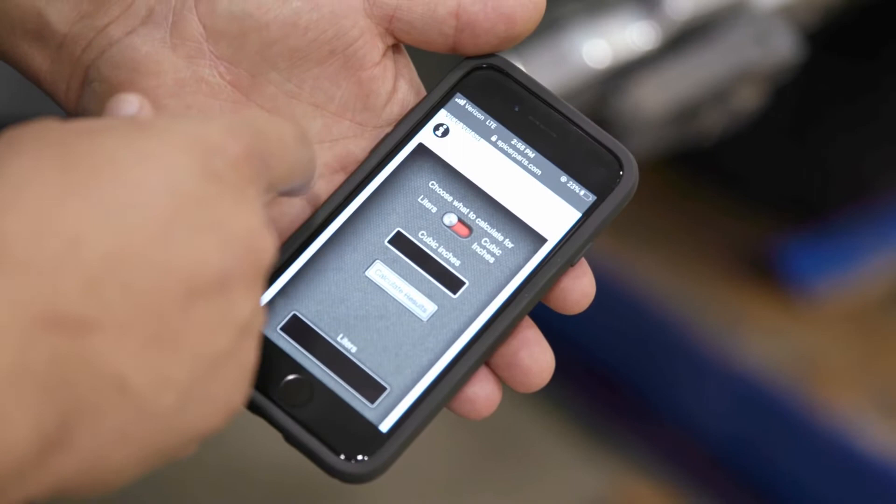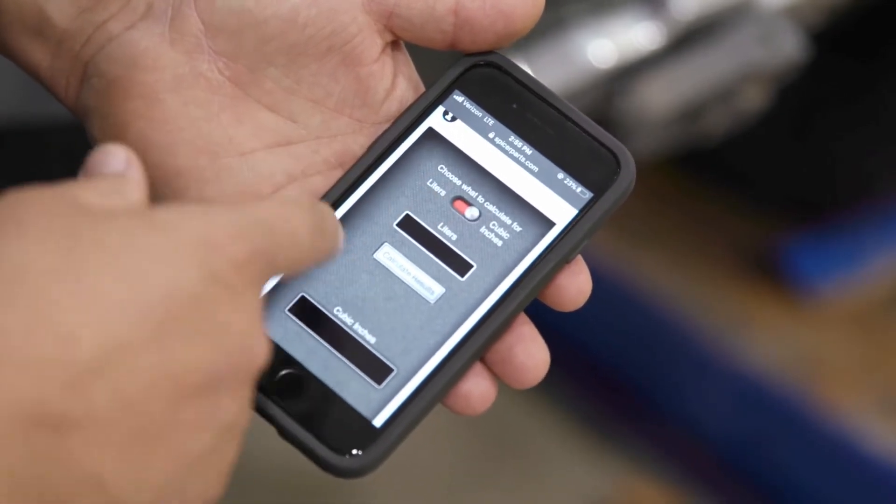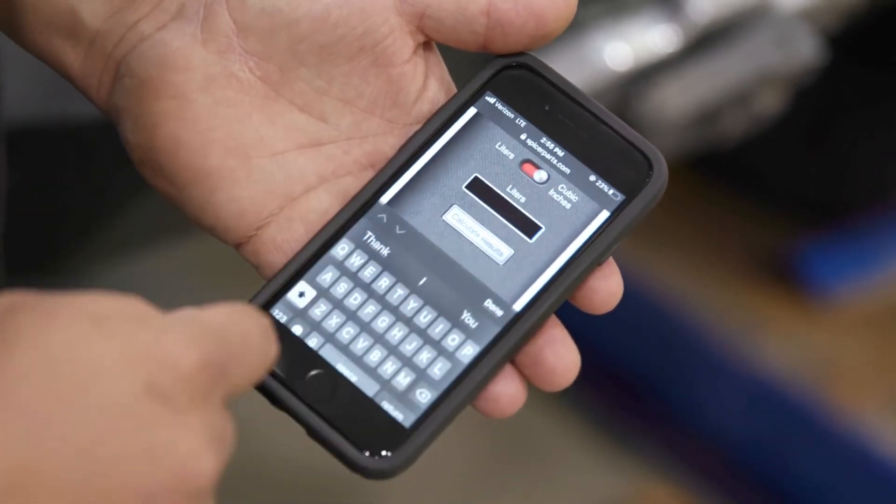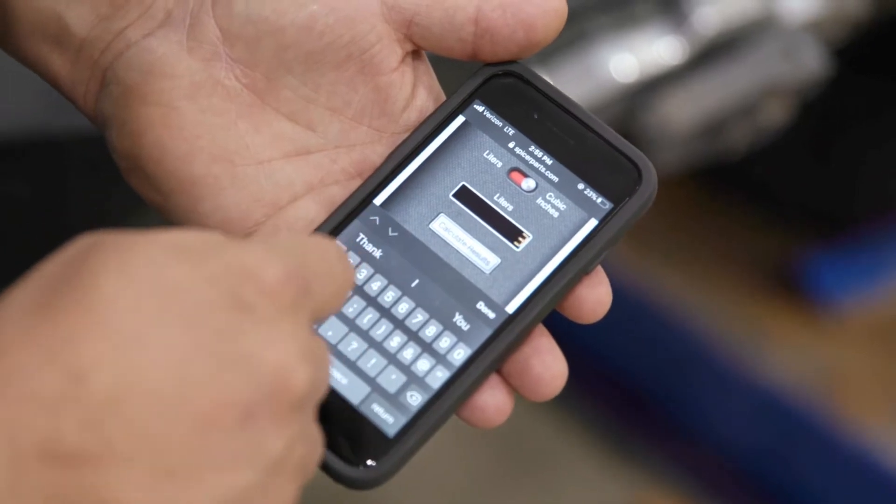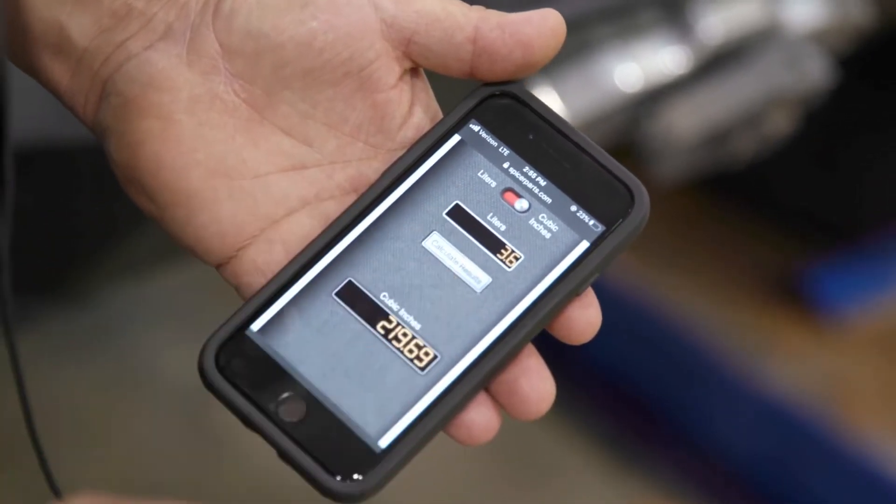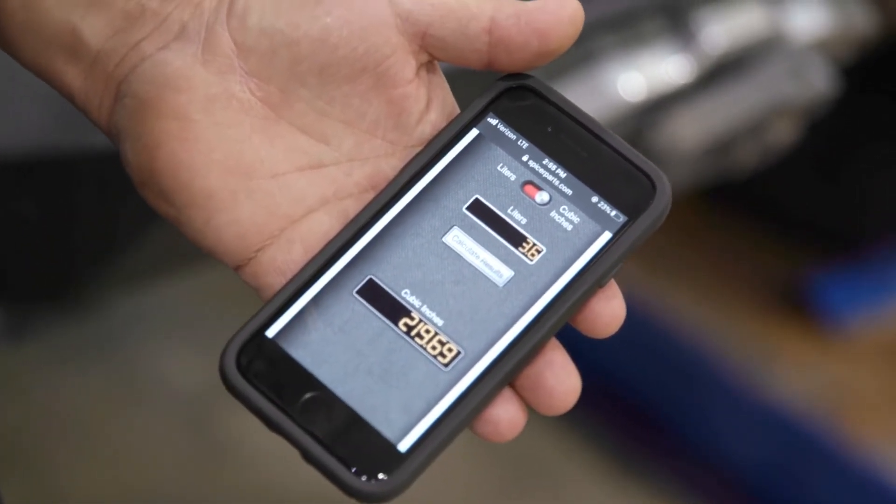If we know the number of liters that we have and want to know how many cubic inches it is, we have a 3.6 liter engine - it's about 220 cubic inches. Or if we have a 5.7 liter engine, we know that that's almost 350 cubic inches.